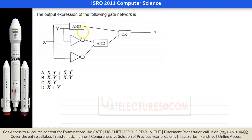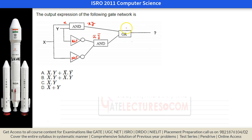This is a simple digital design question. We have an AND gate with inputs X and Y, and another AND gate with NOT of X and NOT of Y. The first AND gate output is XY and the second is X̄Ȳ. These two are then OR'd together, giving the output F = XY + X̄Ȳ.